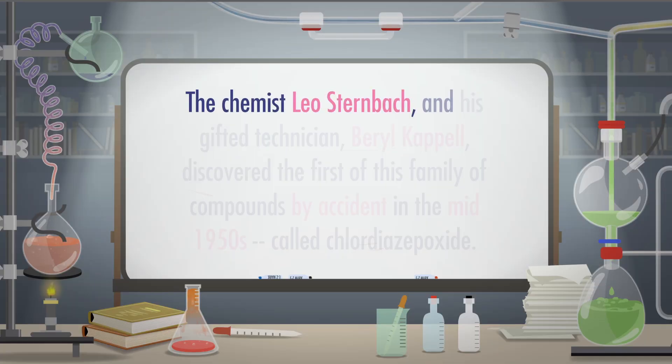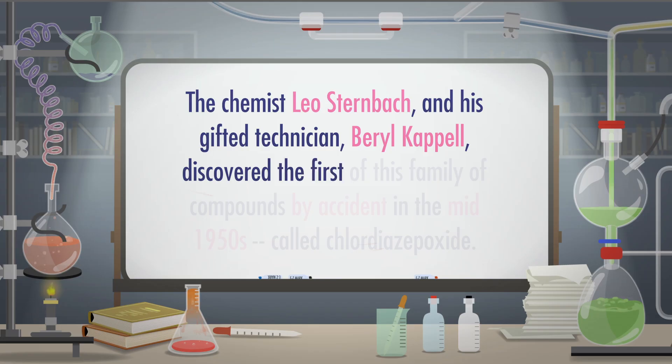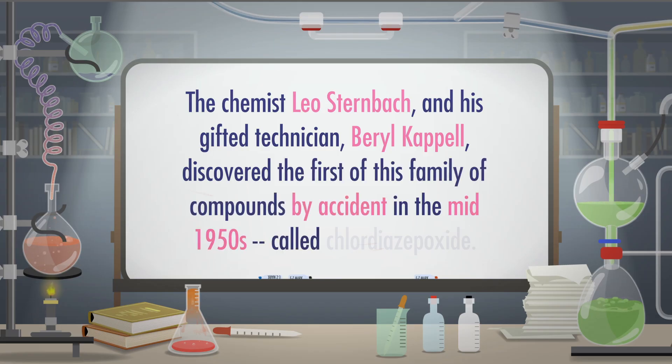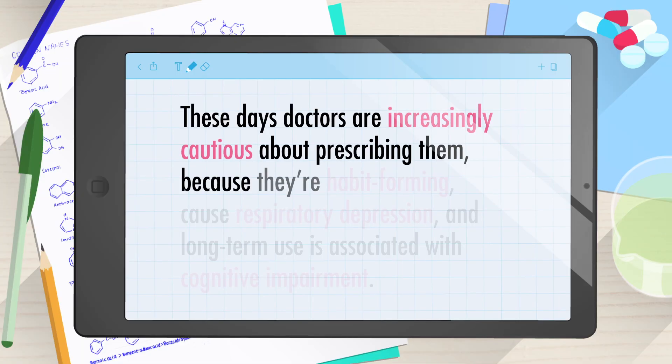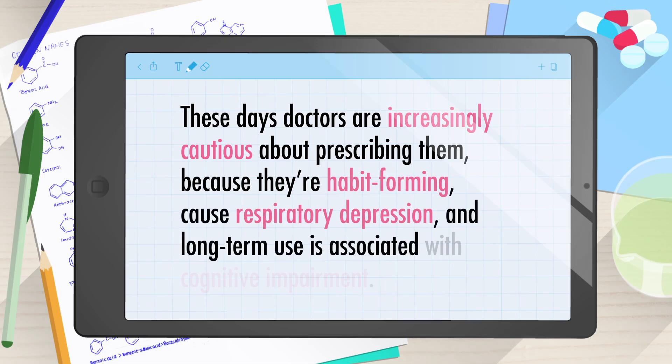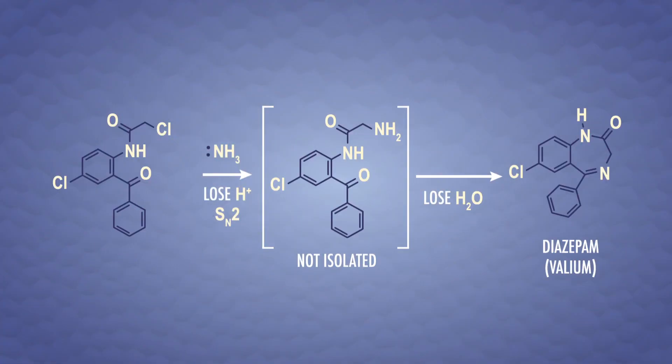We talked about Valium to start, which is a brand name for diazepam. The chemist Leo Sternbach, and his gifted technician Beryl Kappel, discovered the first of this family of compounds by accident in the mid-1950s, called chlordiazepoxide. Kappel had been screening potential muscle relaxants for seven years, when she found that this compound had anxiety-reducing effects. A few years later, the discovery of diazepam followed. These drugs quickly became popular because they reduce anxiety and tension without the knockout effect of something like chloral hydrate. These days, doctors are increasingly cautious about prescribing them, because they're habit-forming, cause respiratory depression, and long-term use is associated with cognitive impairment. However, despite its complicated medical history, diazepam is a useful example for carbonyl chemistry. Let's focus on one part of its synthesis, involving the top bit of the molecule with a chloroacetate.